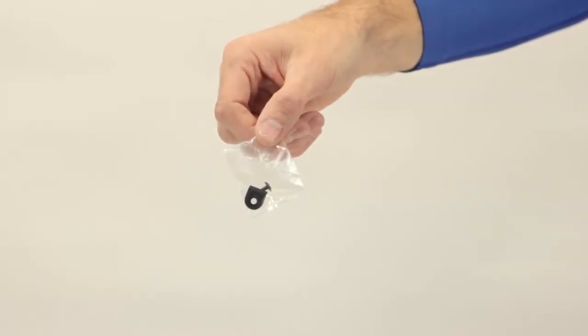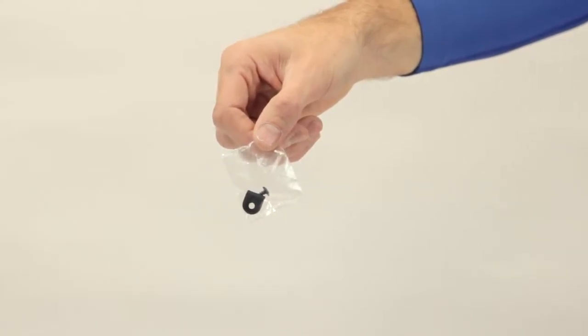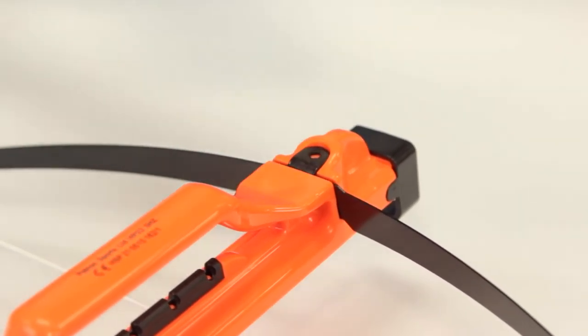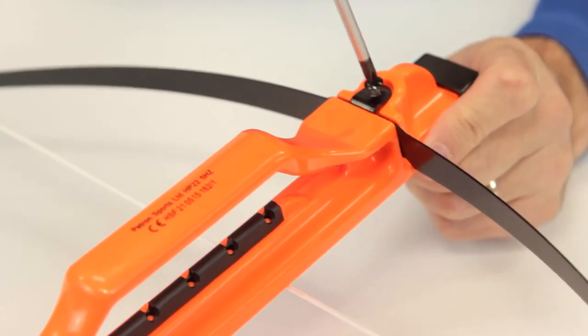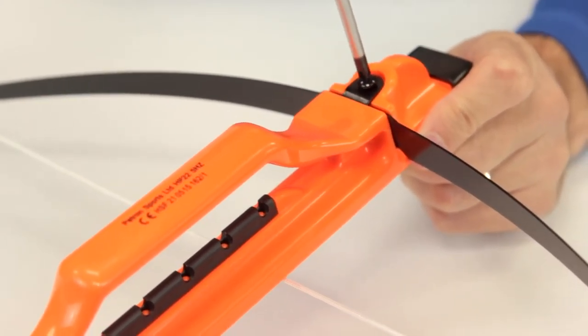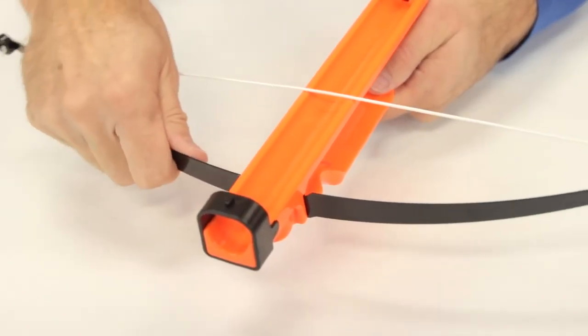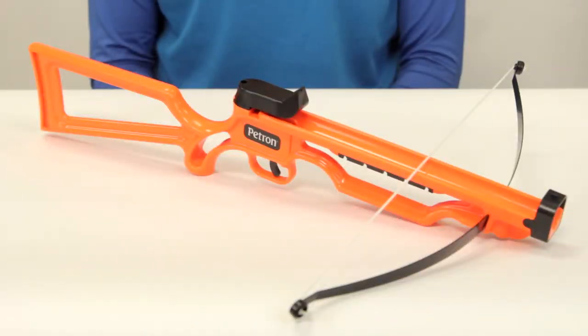Next you will need to take the clamp plate and screw out of the poly bag which includes the darts. Place the clamp plate over the prod then insert the screw into the hole then tighten with the Phillips screwdriver. The prod should now be secure. That's assembly complete.